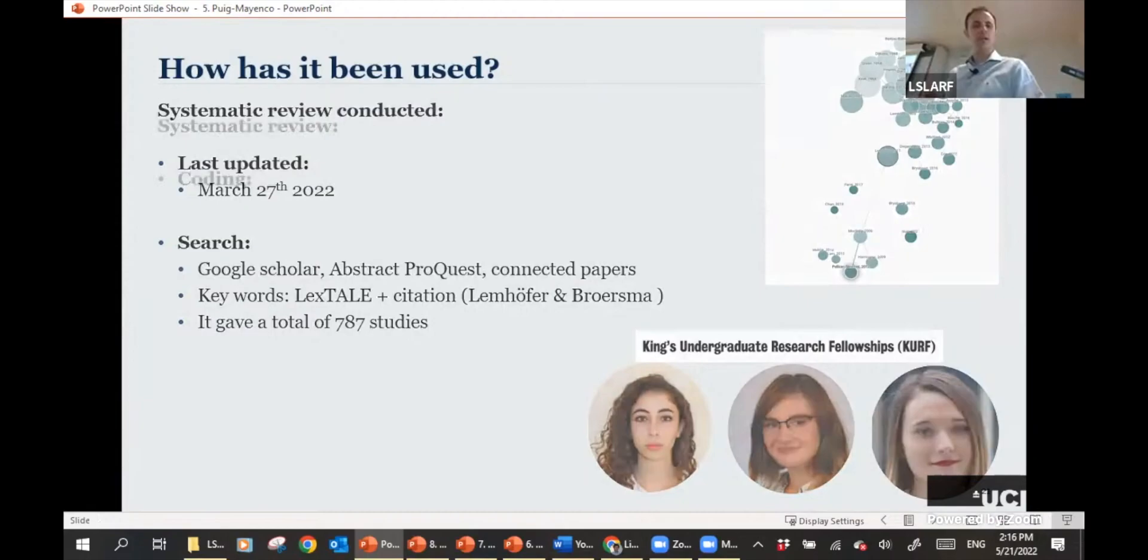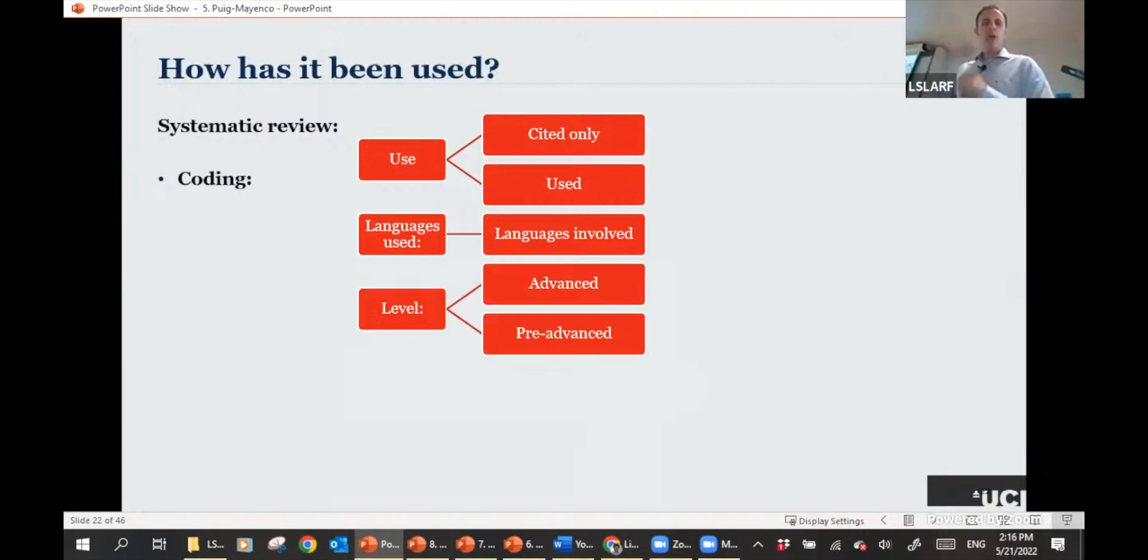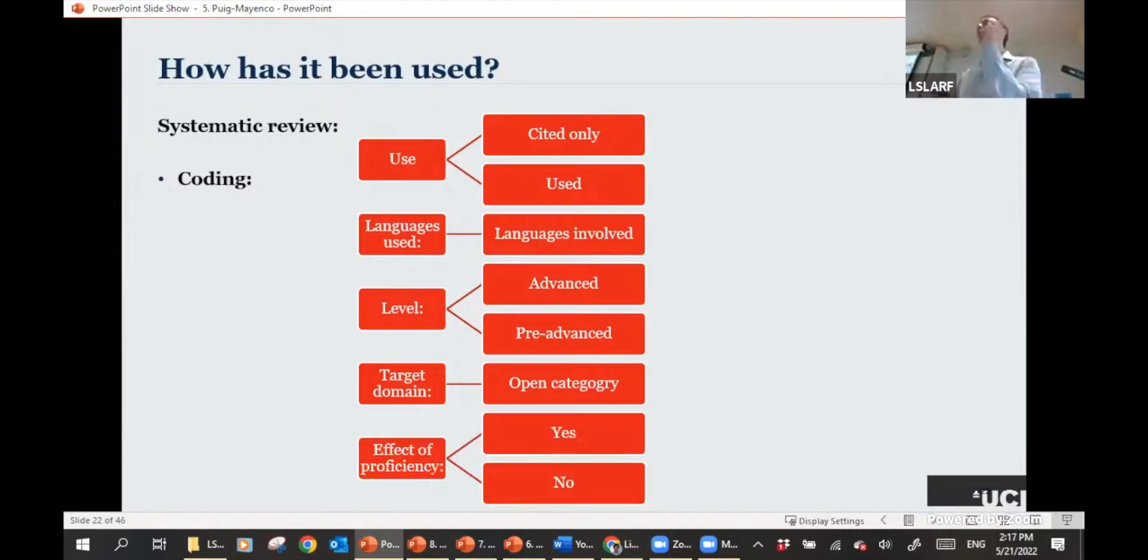In terms of the coding procedure, what we did was we first coded for whether the LexTALE had been only cited or actually used in the experimental design. We also coded for the L1 of the participants used in the study to see the type of L1s that the LexTALE had been used with. The level of the participants in the study, we wanted to know whether it had been used with advanced learners or pre-advanced. And then we had the target domain, whether they'd been looking at phonology, vocabulary, syntax, semantics, vocabulary acquisition, pragmatics, and then whether they had actually found an effect of proficiency or not.